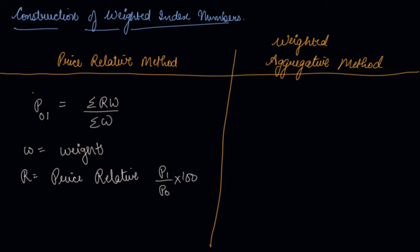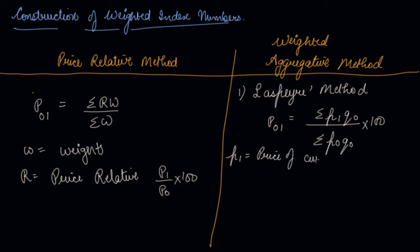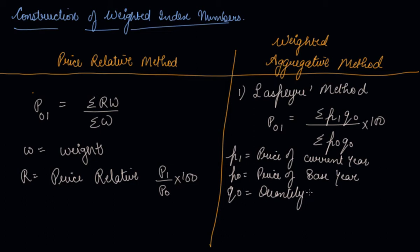The weighted aggregated method can be calculated by three formulas. The first formula was given by Laspeyre's method, which states that the price index of the current year in relation to the base year is equal to the summation of the price of the current year into the quantity of the base year, divided by the summation of the price of the base year into the quantity of the base year, into 100. Here, P1 is the price of the current year, P0 is the price of the base year, and Q0 is the quantity of the base year.